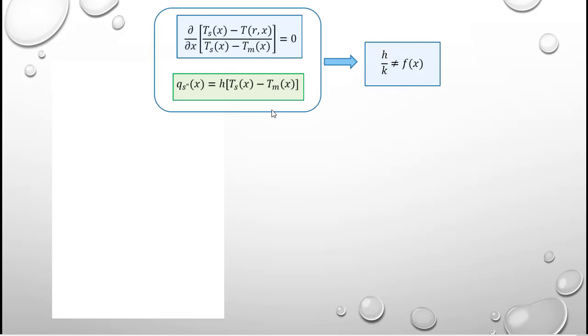The result is that the term H over K is not a function of X, meaning H over K is a constant. In most situations we'll be dealing with, K the thermal conductivity of the fluid is a constant, so we find that H the heat transfer coefficient will also be a constant.